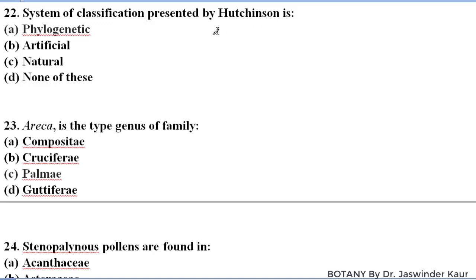The system of classification presented by Hutchinson was the phylogenetic system of classification. Erica is a type genus of family Ericaceae. The alternative name of Ericaceae is family Pirolagi.